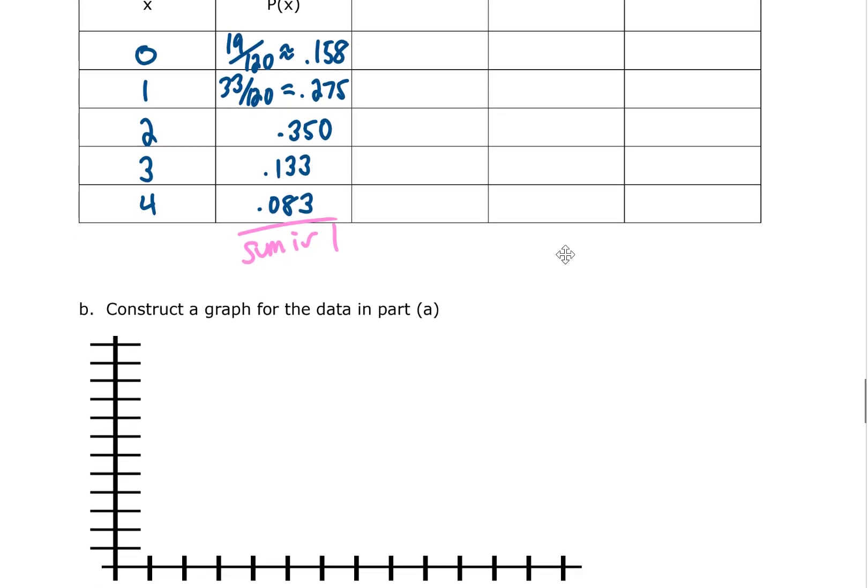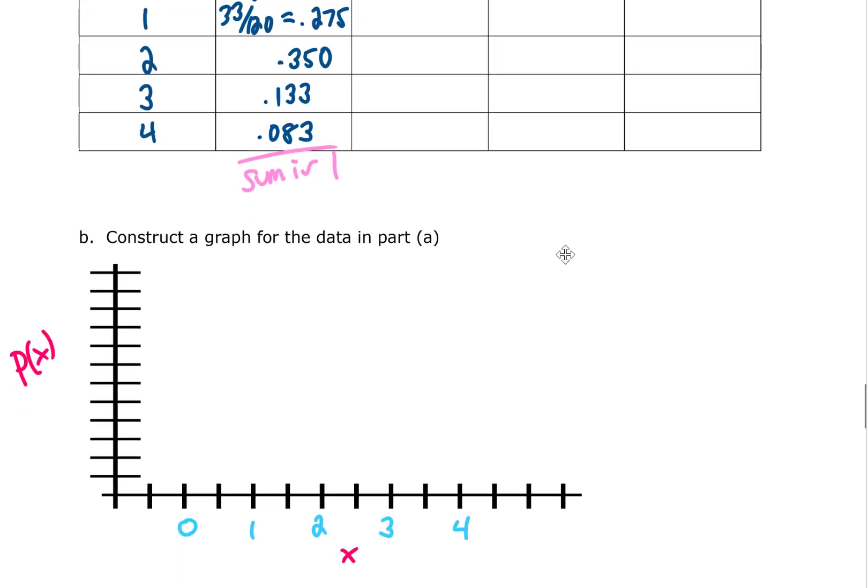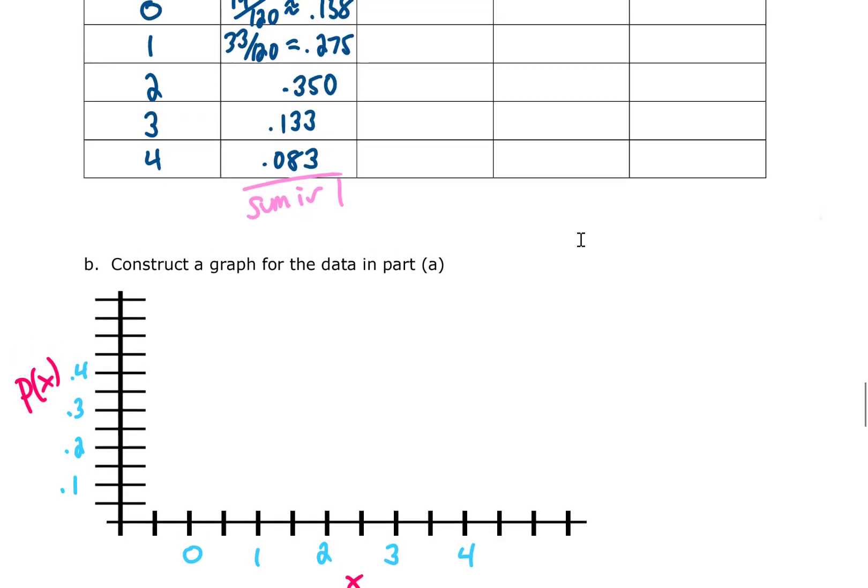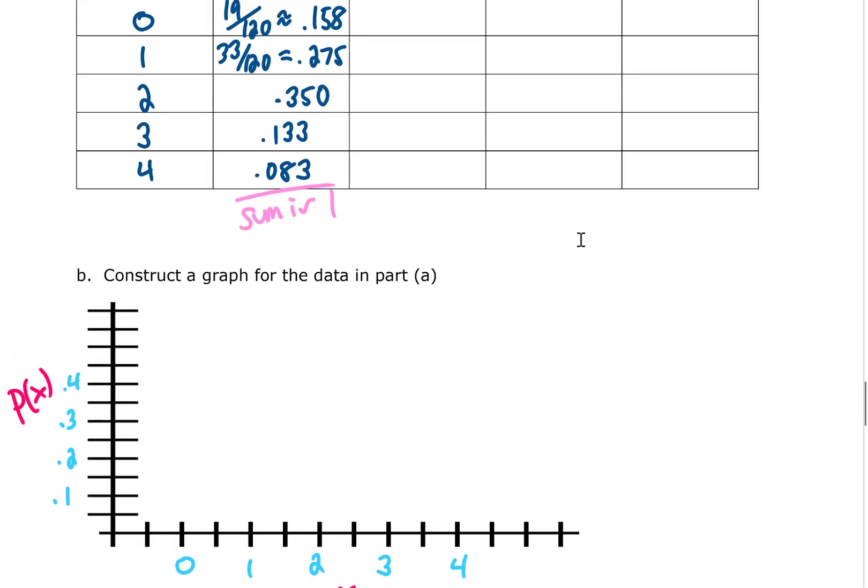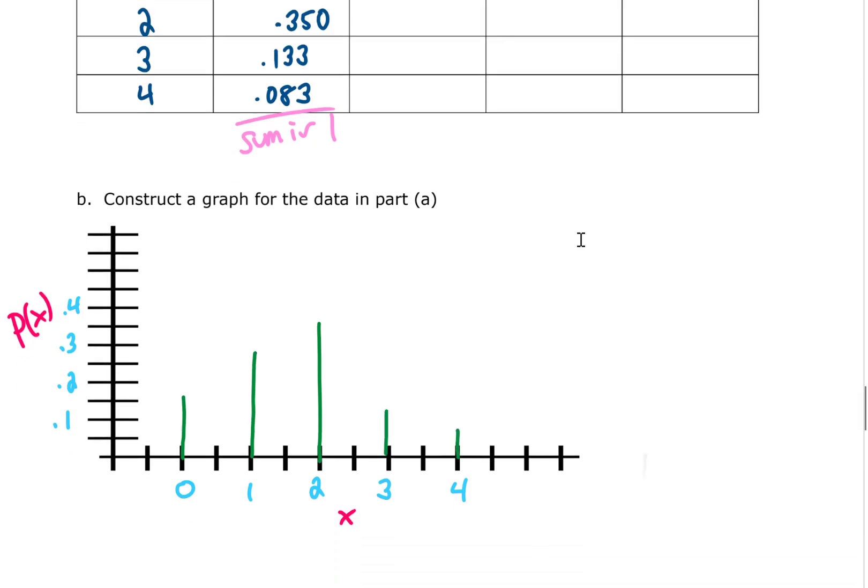The next thing we want to do is construct a graph for this data. Along the horizontal axis we're putting our number of injuries and along the vertical axis we're putting the probability of having that many injuries. In our table our largest probability is 0.35 and I'm going to make a bar for each one of these probabilities.